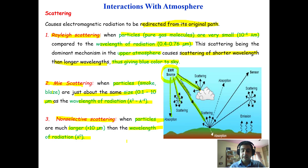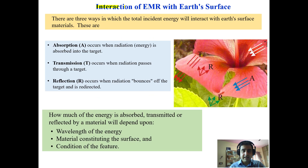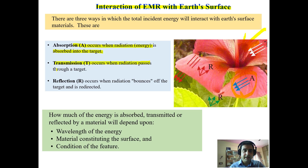Another mechanism is the interaction of electromagnetic radiation with the Earth's surface. When electromagnetic radiation is incident on a surface, three processes may occur: absorption, where radiation is absorbed into the target; transmission, where radiation passes through the target; and reflection, where radiation bounces off the target and is redirected.